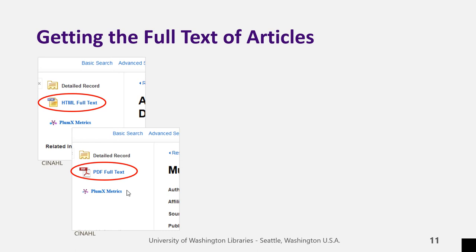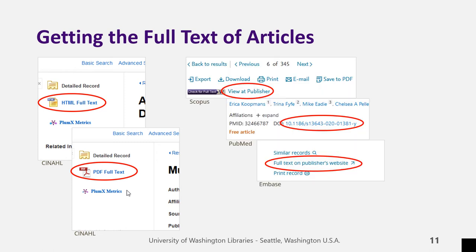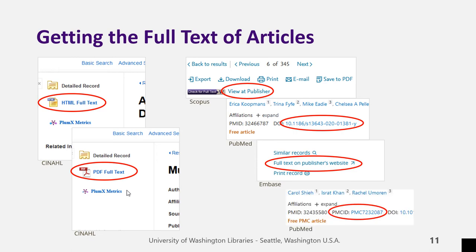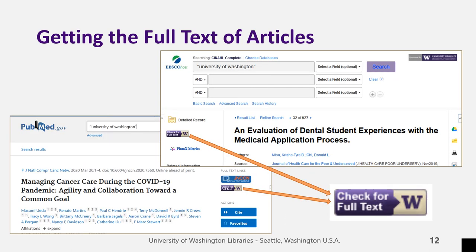All of our databases provide links to the full text of an article or a way to order the article. For some results, the full text article will be available in the database itself, appearing as HTML full text, PDF full text, or sometimes both. Sometimes the database will provide a link to the full text at the publisher's website or in PubMed Central. If the database does not provide the article or a link to the article, look for the Check for Full Text button. Clicking it will either take you directly to the article or to the page in the UW Libraries catalog through which you can access the article.